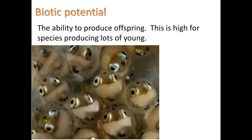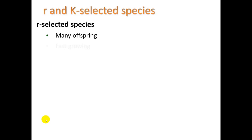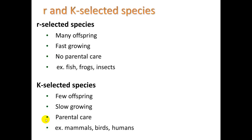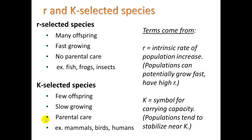Here's another concept: biotic potential — the ability to produce offspring, which is high for species producing lots of young. R and K selected species are two ways of categorizing biotic potential. R-selected species have very high biotic potential: many offspring, fast growing, no parental care — examples are fish, frogs, and insects. K-selected species have few offspring, are slow growing, and provide parental care — such as mammals, birds, and humans. R means intrinsic rate of population increase; K is a symbol for carrying capacity. Importantly, R-selected species are better able to rebound after a disturbance because they reproduce quickly.